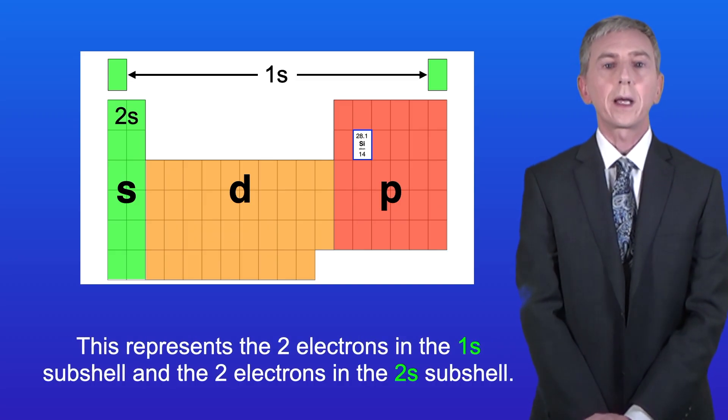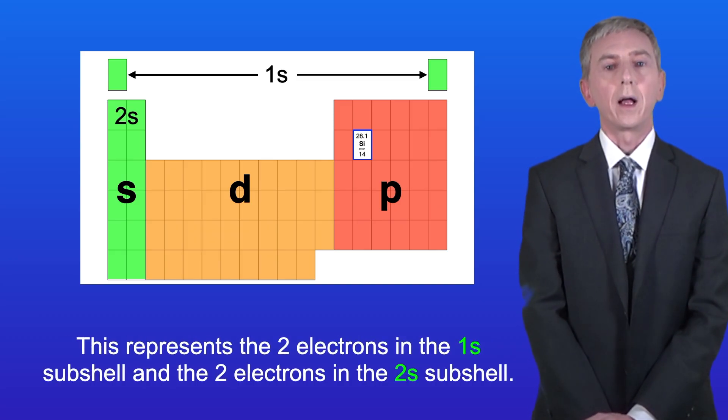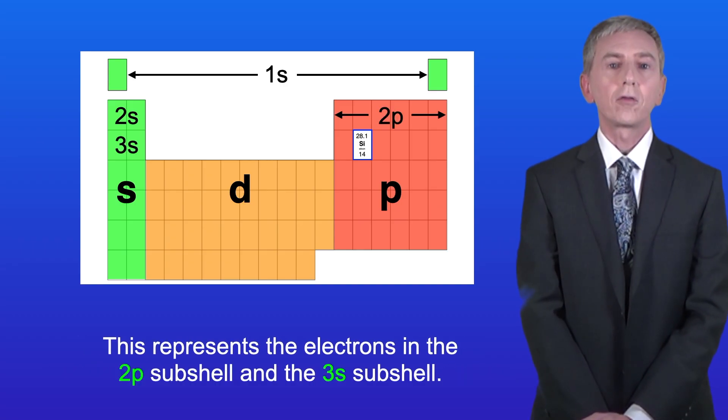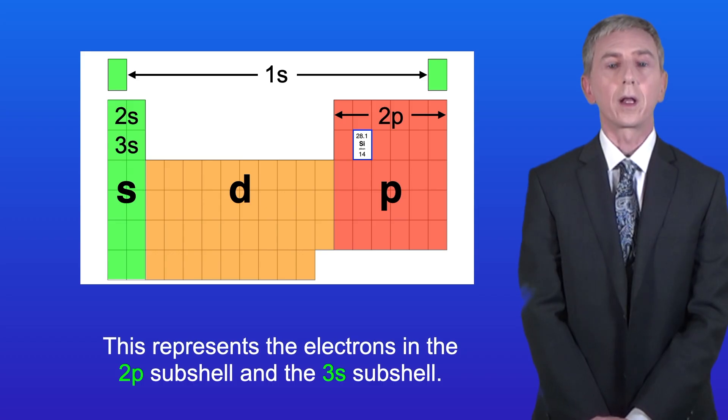This represents the two electrons in the 1s subshell and the two electrons in the 2s subshell. And this represents the electrons in the 2p subshell and the 3s subshell.